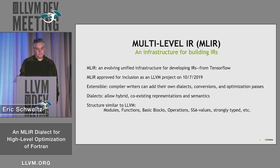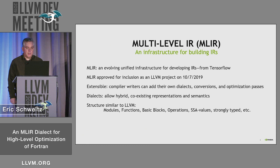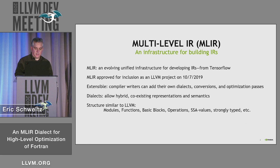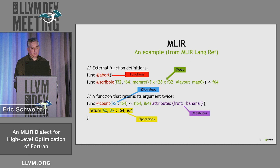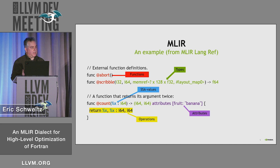This extensibility lets you build a dialect for Fortran, and also mix it with dialects such as the Affine dialect, which provides additional optimization opportunities. MLIR is similar to LLVM IR in some ways — it has modules, functions, basic blocks and control flow graphs, and operations that interact through SSA values. Everything is strongly typed. Attributes are another feature, letting you tag operations with information useful for an optimizer.